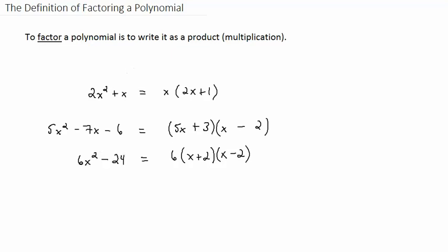Here we can see three different polynomials, each written in two different ways. For example, 2x² + x is the same as x times the quantity (2x + 1). Those two polynomials are equal, but the polynomial on the left is not multiplication, it is addition. The polynomial on the left is what we call simplified, meaning there are no parentheses and like terms are combined.